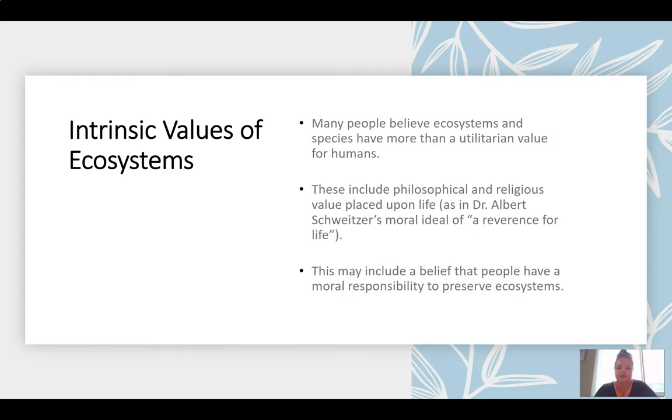Many people believe ecosystems and species have more than just a utilitarian value for humans. These include both philosophical and religious value that is placed upon life. This is true in Dr. Albert Schweitzer's moral idea of reverence for life, the belief that people have a moral responsibility to preserve ecosystems. This gets into environmental science: we need to preserve ecosystems and allow some natural disturbance to promote evolution, but we don't necessarily want to completely disturb them with our human activities because that will wipe out their ecosystem and completely alter the different biomes on Earth.